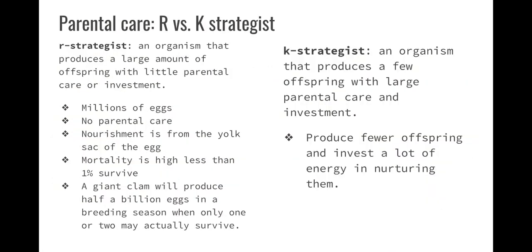Different kinds of strategists. An R strategist is an organism that has a lot of offspring and very little parental care. There are many eggs because they're not going to be caring for their young. No parental care — nourishment comes from a yolk sac. Mortality is high; less than 1% will survive. The giant clam can produce half a billion eggs in its entire breeding season, and only one or two might actually survive.